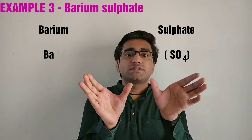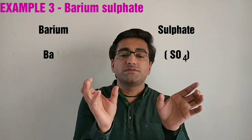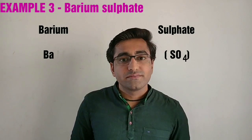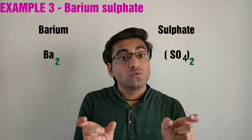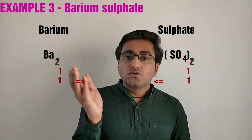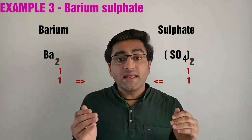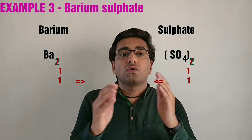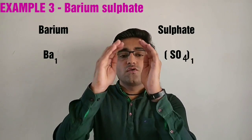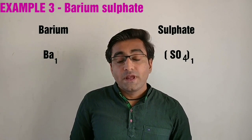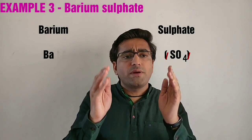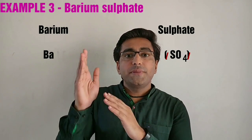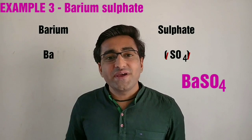Let us take one more example of Barium Sulfate. Barium's symbol is Ba, Sulfate's symbol is SO₄. Barium's valency is 2 and Sulfate's valency is also 2. Applying the rule, since both valencies are equal, we reduce them to 1 and 1, then criss-cross to get Ba₁(SO₄)₁. Since we don't write the subscript 1, we also remove the bracket, giving us BaSO₄, which is the formula for Barium Sulfate.